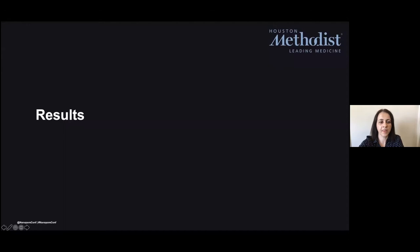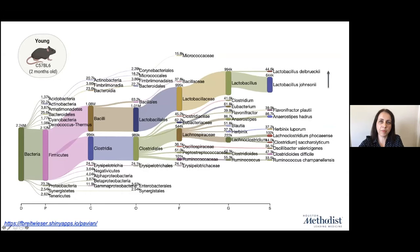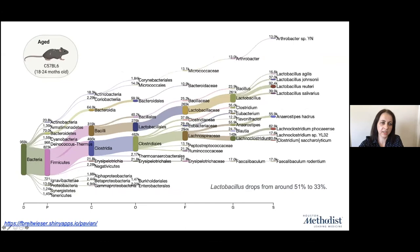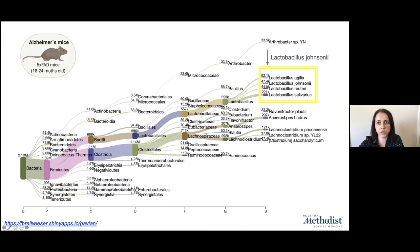In the results, you can see in the Pavian visualization that the Lactobacillus family, specifically Lactobacillus johnsonii, is the most dominant bacteria in young animals in the gut microbiome, at around 38% of the bacteria. Lactobacillus is still the most abundant genus in the aged mouse; however, compared to young animals, the Lactobacillus species drops from 50% to 30%. In Alzheimer's animals, there is also a decrease in Lactobacillus species, not only Lactobacillus johnsonii, similar to the aged animals.